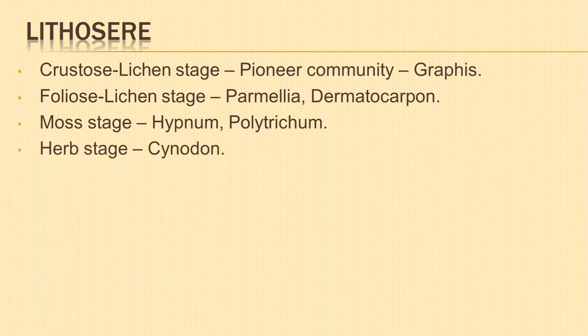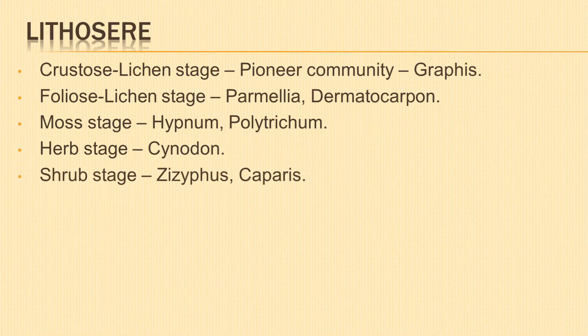Next is the herb stage. Annual grasses start growing; their roots penetrate deeper, causing more weathering of rocks. They replace the mosses and change the composition of soil. They are then replaced by perennial grasses, for example Cynodon, which add to the thickness and fertility of the soil. Next is the shrub stage. With the accumulation of more soil, the habitat becomes suitable for shrubs like Ziziphus and Capparis. They replace the grasses and herbs, and their dead decaying leaves add organic matter and make the soil more fertile.